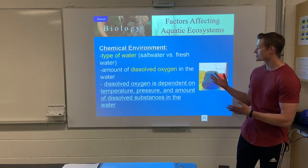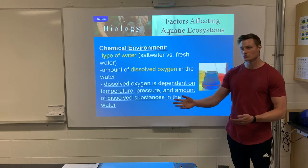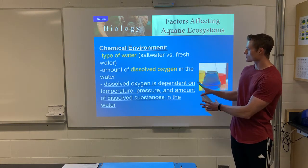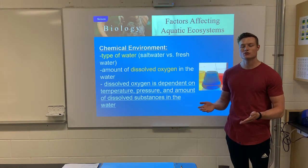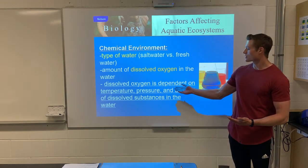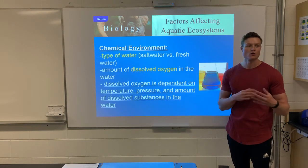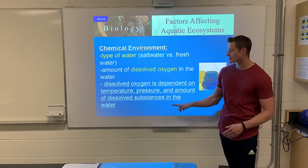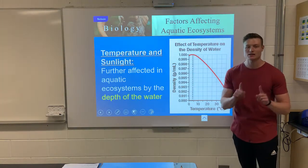Now, factors that affect aquatic ecosystems: number one is the chemical environment, which includes the type of water and dissolved oxygen — whether it's saltwater or freshwater. Some organisms are adapted to freshwater, some to saltwater. Dissolved oxygen is essential in aquatic ecosystems. In terrestrial ecosystems you just breathe air, but in aquatic ecosystems, if there's not enough oxygen dissolved in the water, organisms can't get the oxygen they need.